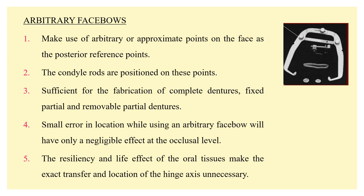In your arbitrary face bow, you make use of approximate points on the face and posterior reference points, and the condylar rods are placed on these positions. It need not necessarily be as accurate as your ear bow, where you place the earplugs straight into the external auditory meatus. Arbitrary face bows are sufficient for fabrication of complete dentures, fixed partial dentures, and removable partial dentures. A small error in location while establishing your hinge axis will have only a negligible effect at your occlusal level.